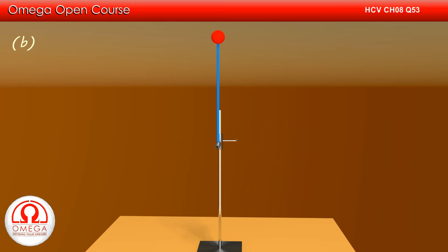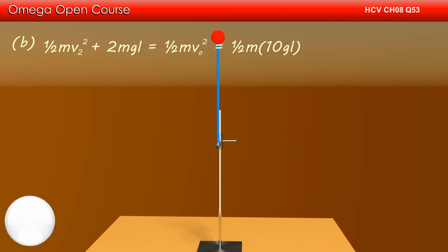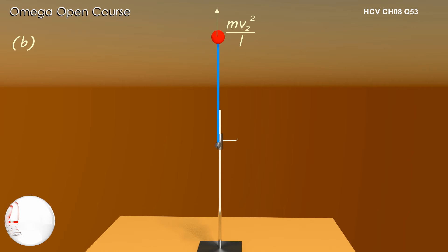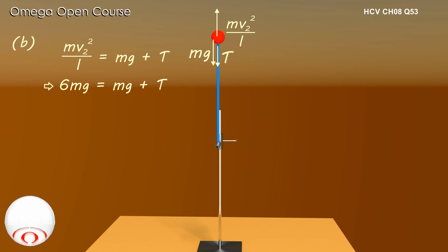In Part B, the bob is at the highest position with velocity V2. The height from the lowest position is 2L, so by conservation of energy: ½mV2² + 2mgL = ½m(10gL), giving V2² + 4gL = 10gL, or V2² = 6gL. In the free body diagram, centripetal force mV2²/L acts upward, while gravity mg and tension T both act downward. Balancing: mV2²/L = mg + T, so 6mg = mg + T, giving T = 5mg. This is the answer to Part B.